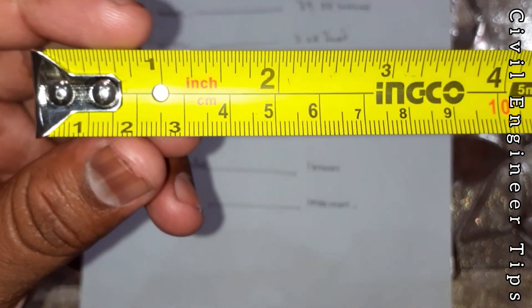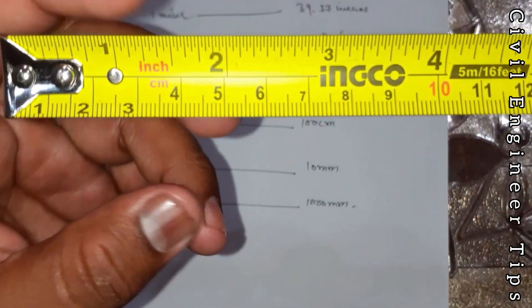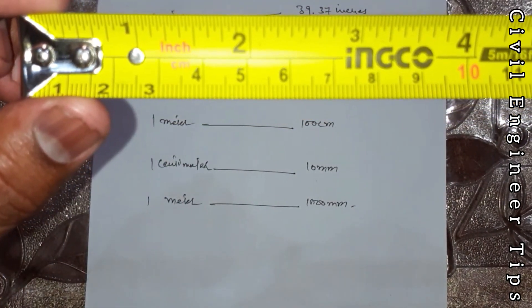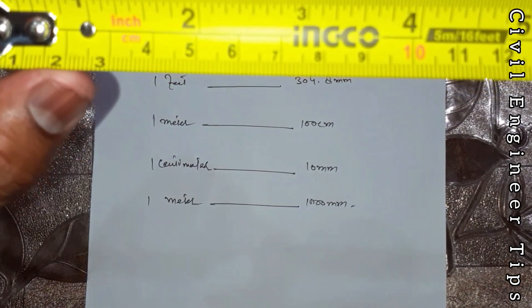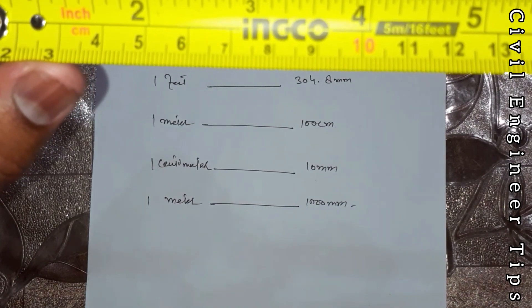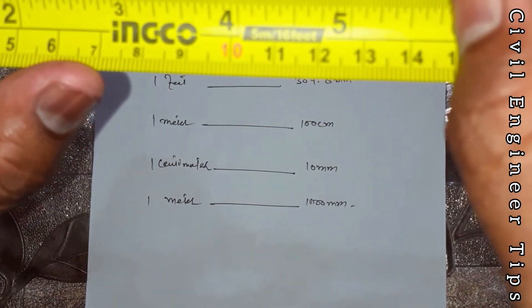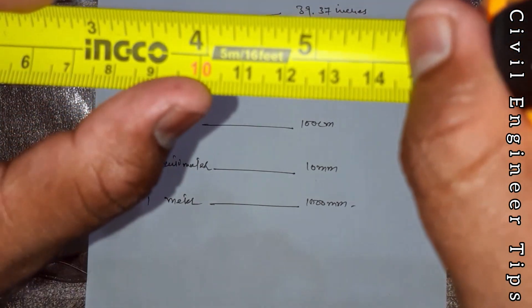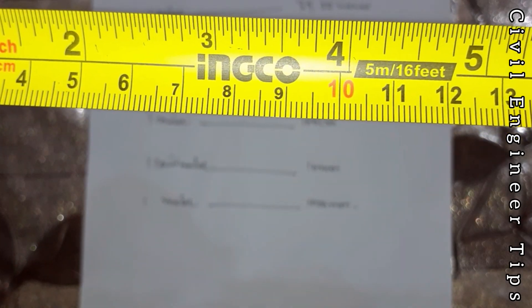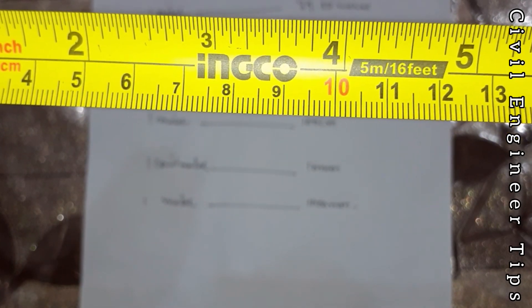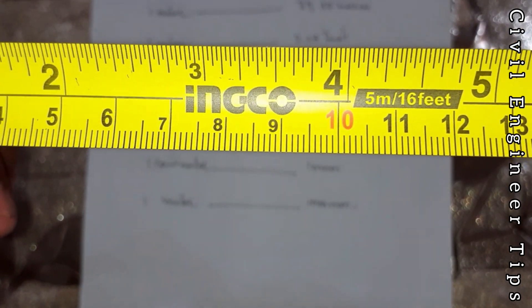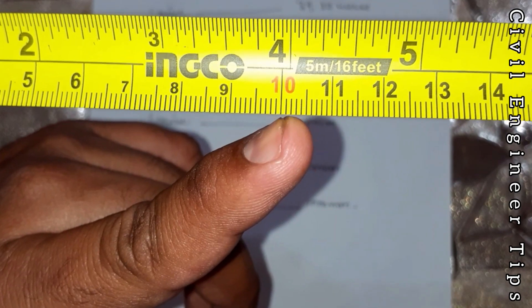Now we will read in centimeters and millimeters. Guys, you know very well one centimeter is equal to 10 millimeters, two centimeters is equal to 20 millimeters, three centimeters is equal to 30 millimeters, four, five, six, seven, eight, nine, ten. Ten centimeters is equal to 100 millimeters. You can see it clearly.